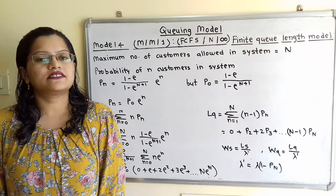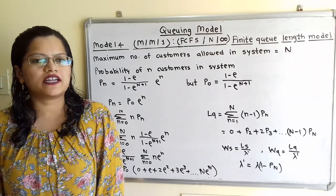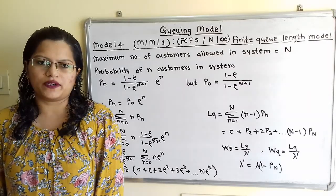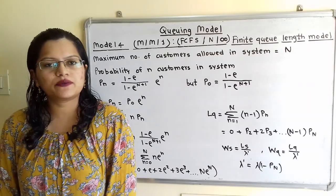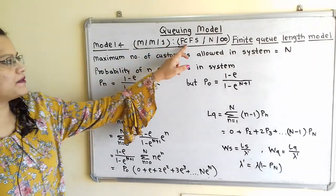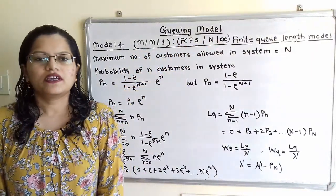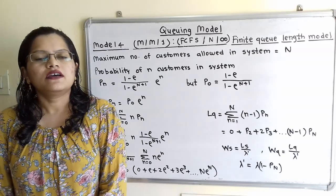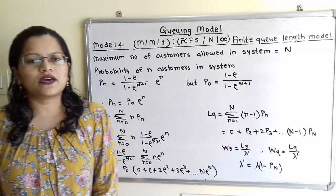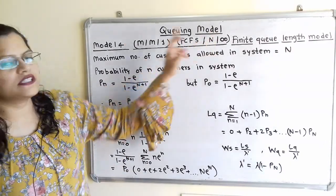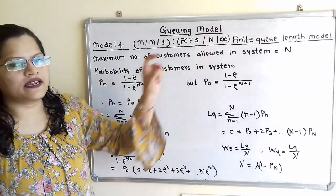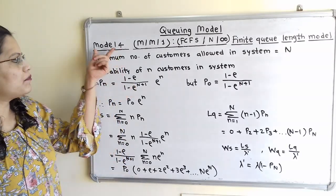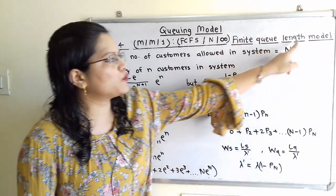Now let us understand some important formulae related to Model 4, which are useful to solve problems. Model 4 is symbolically represented as M/M/1/FCFS/N/∞. Compared to Model 1, the only difference is that the number of customers allowed in the system is finite — that is, capital N, which is mentioned in the question. So Model 4 is the finite queue-length model.